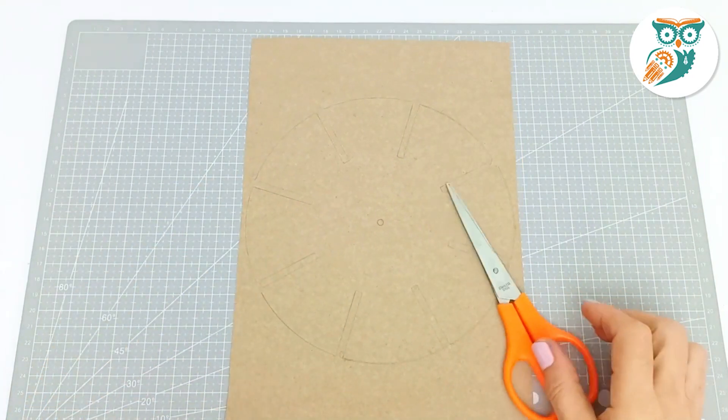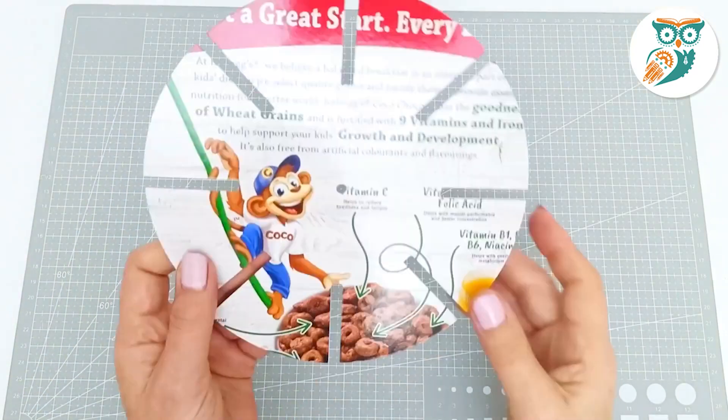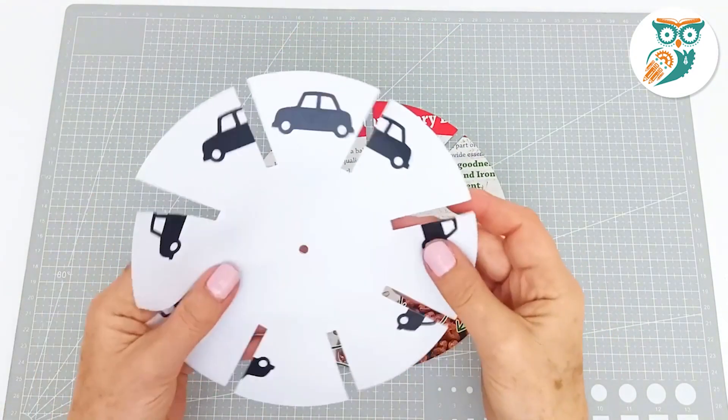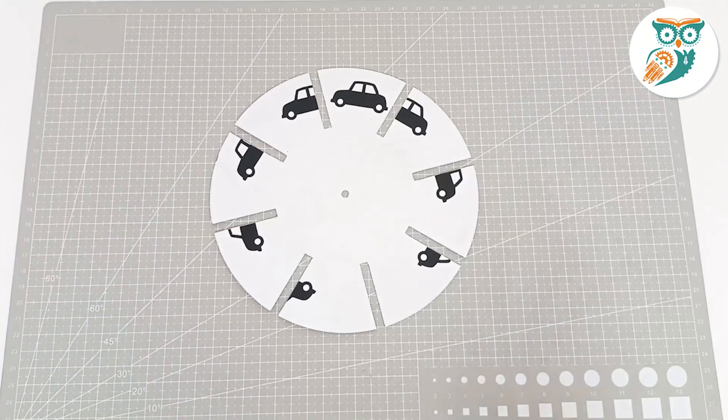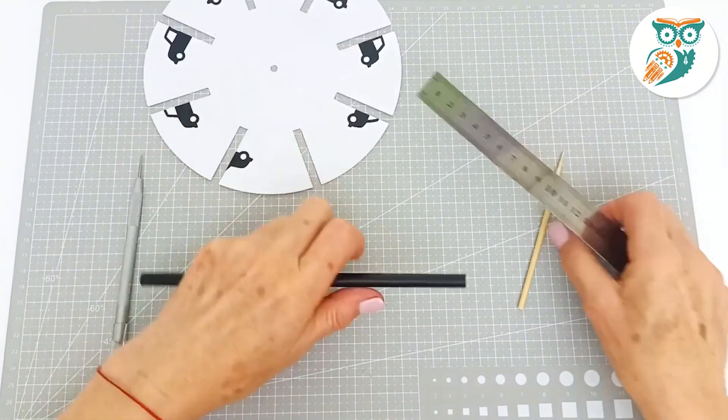You also need to cut out the part of the template that has the images. In our case here it has a car. Flip it over and glue your template onto the side that has the lettering and designs on it. We want to make sure that that is covered for this experiment.